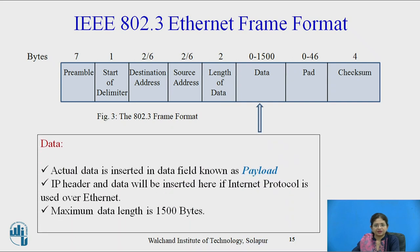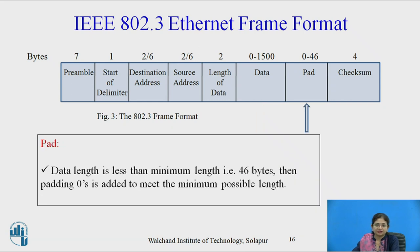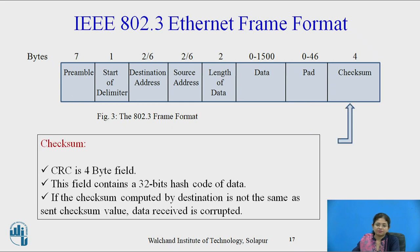The data field contains the actual data, known as the payload. If the internet protocol is used over Ethernet, the IP header and data will be inserted here. The maximum data length is 1500 bytes. The padding field is used when data length is less than the minimum length of 46 bytes; padding zeros are added to meet the minimum possible length. The checksum field, CRC, is a 4-byte field containing a 32-bit hash code of the data to detect errors present in the frame.